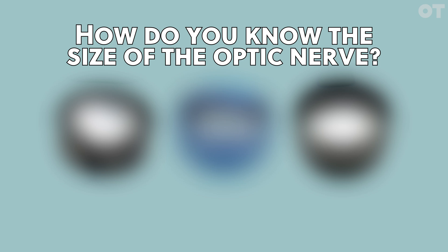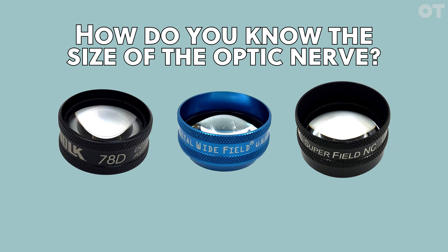How do you know the size of the optic nerve? You can get an approximate measurement of the disc and cup using a slit lamp biomicroscope and a high-powered condensing lens, commonly known as a volk lens.